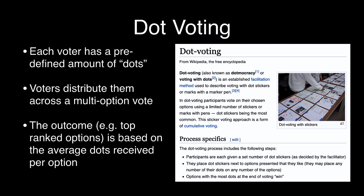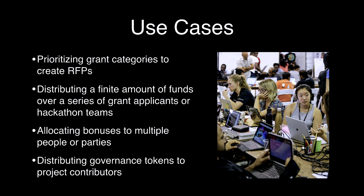You can prioritize grant categories to create RFPs, you can distribute a finite amount of funds over a series of grants, you can allocate bonuses to multiple people or parties, or you can distribute governance tokens to project contributors. I just wanted to give you a little overview before we jump into the demo so you have an understanding of this mechanism.